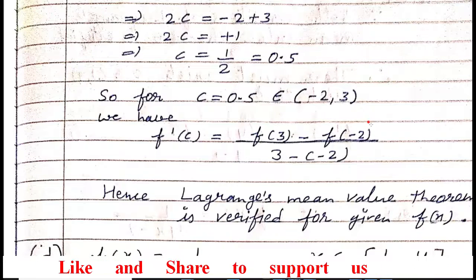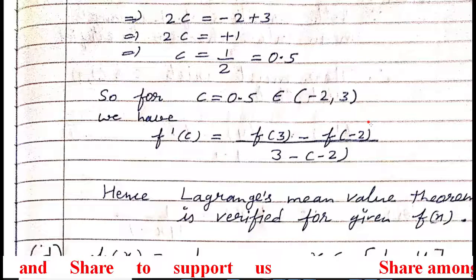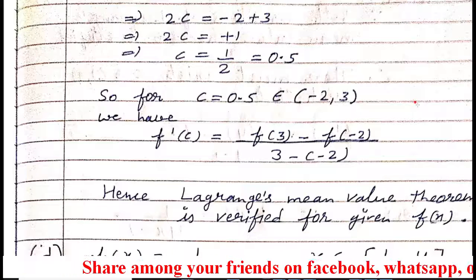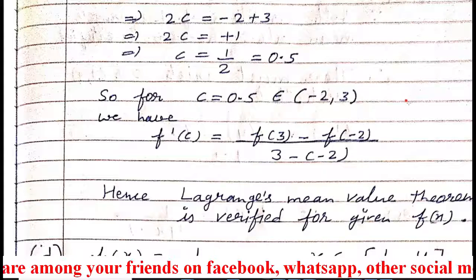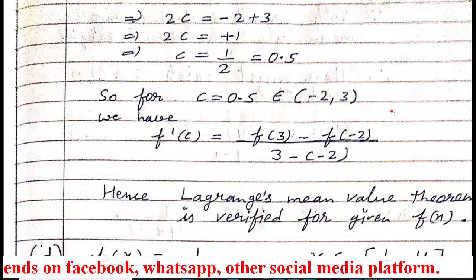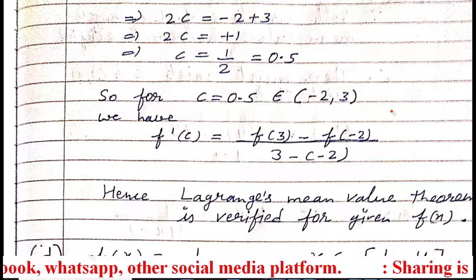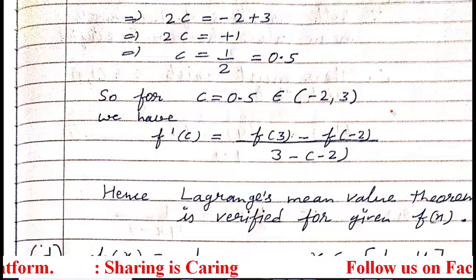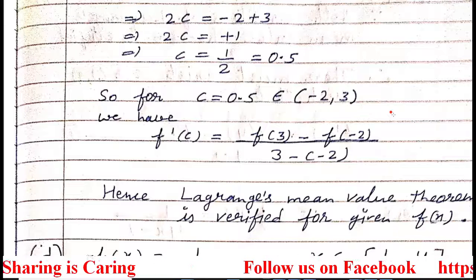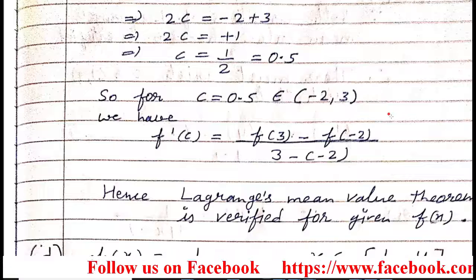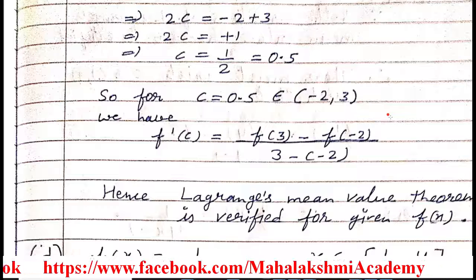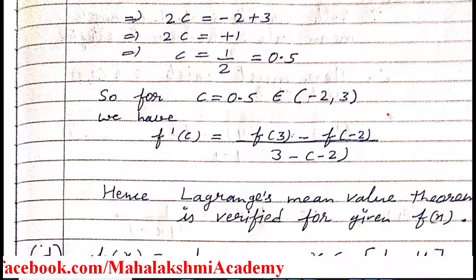I hope both parts B and C of question number three are clear to you. We used the concept of Lagrange's mean value theorem. There are two conditions: first, the function should be continuous in the closed interval; second, the function should be differentiable in the open interval. If both are satisfied, there must exist a point c in the given interval where f'(c) equals the function's value at the upper limit minus the lower limit, divided by the upper limit minus the lower limit. Thank you.